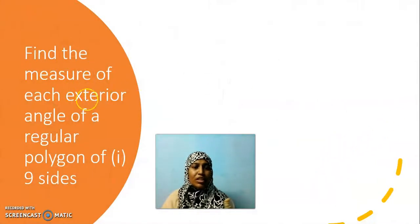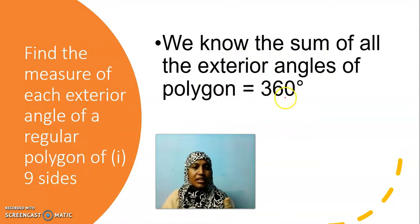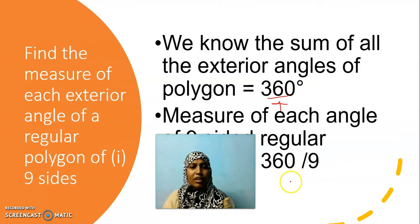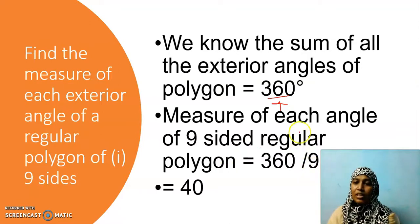Find the measure of each exterior angle of a regular polygon of 9 sides. We know that the sum of exterior angles is 360 degrees, so it has to be divided by 9. 360 divided by 9 is 40 degrees. So each exterior angle is 40 degrees. In the previous problem we divided by 5 because it had 5 sides.